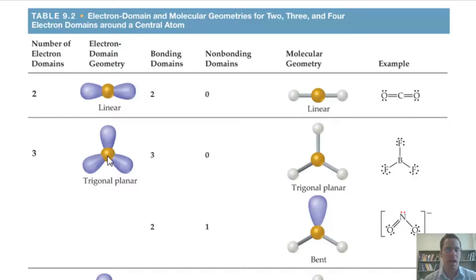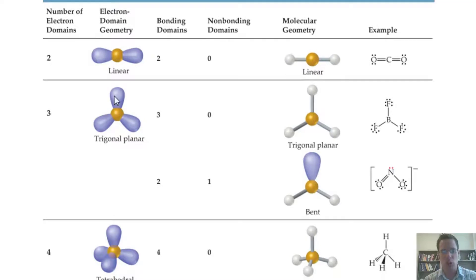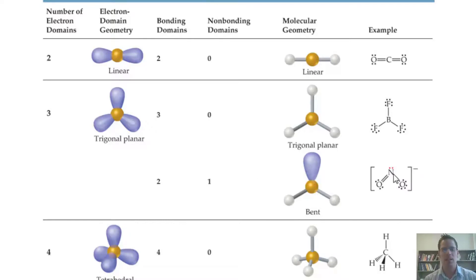If a central atom has three bonding groups and no lone pairs, the molecular geometry is trigonal planar — an example is boron trifluoride (BF₃). However, if one of those three groups is a lone pair and the other two are atoms, then there are two bonding domains and one non-bonding domain, giving a bent molecular geometry. An example is nitrogen dioxide (NO₂), with a ~120° angle between the groups.